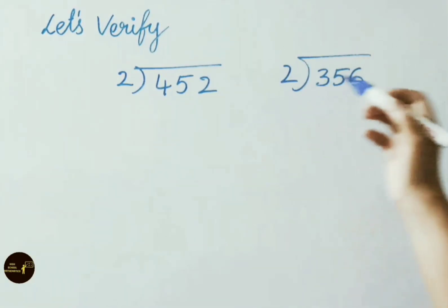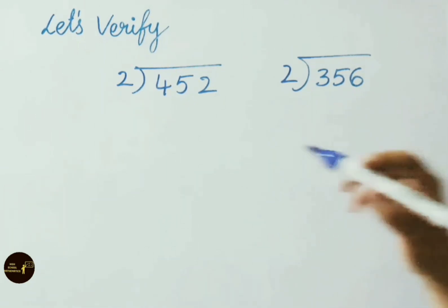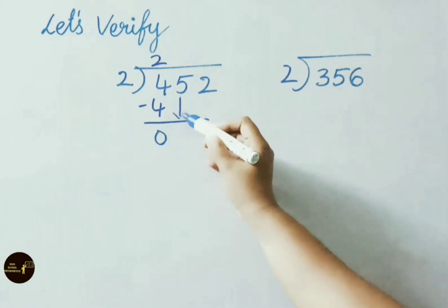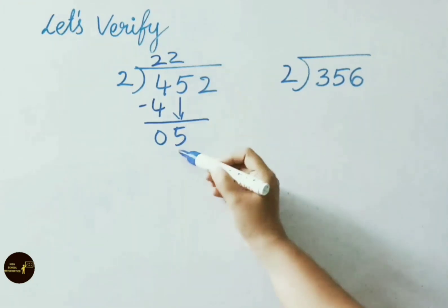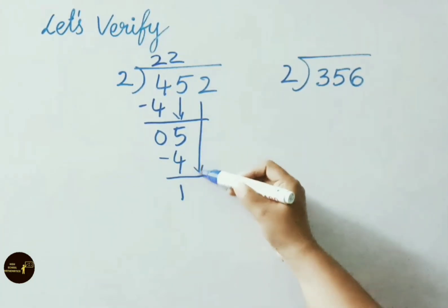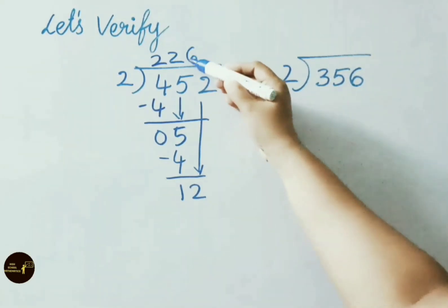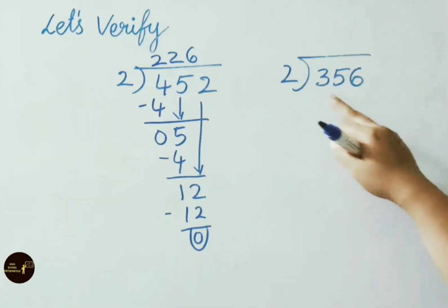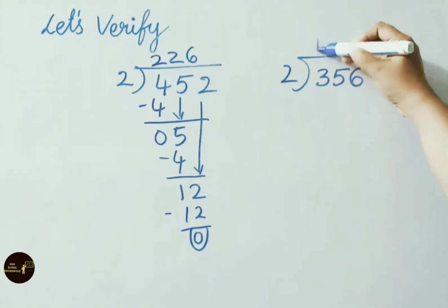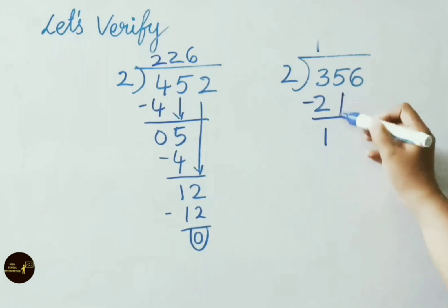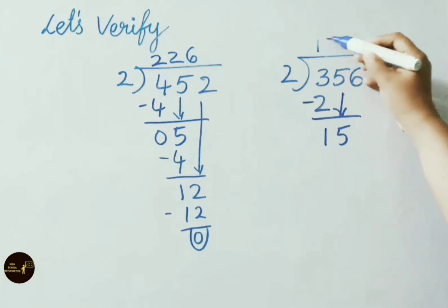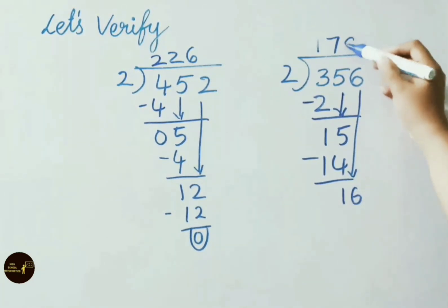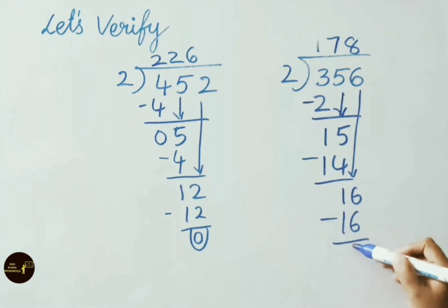Let's verify 452 and 356 by doing actual division. For 452 divided by 2: 2 twos are 4, so 4 minus 4 is 0. Write down 5; 2 twos are 4, so 5 minus 4 is 1. Get down the 2; 2 sixes are 12, so 12 minus 12 gives remainder 0. For 356 divided by 2: 2 ones are 2, so 3 minus 2 is 1. Get down 5; 2 sevens are 14, so 15 minus 14 is 1. Get down 6; 2 eights are 16, so 16 minus 16 is 0. Therefore 356 is divisible by 2.